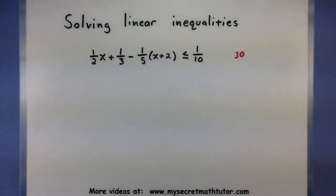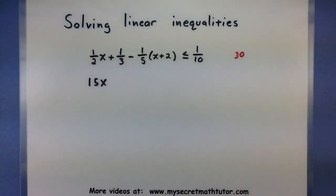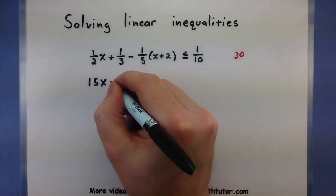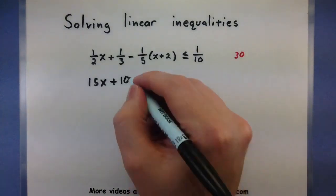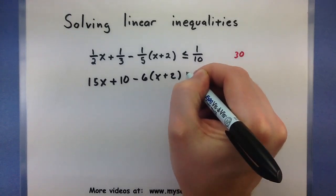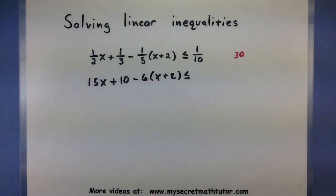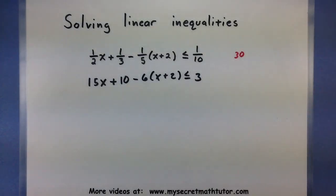Let's multiply every single term by 30 and see what happens. So 1 half multiplied by 30 would be 15x. 1 third multiplied by 30, 10. And 1 fifth multiplied by 30, 6. Moving on to the other side, 1 tenth multiplied by 30, there we go, 3. So everything is looking pretty good, and now I don't have to worry about those fractions.